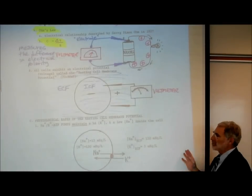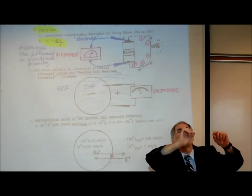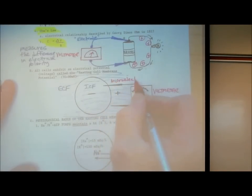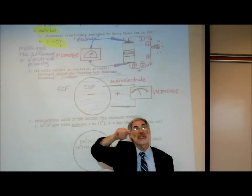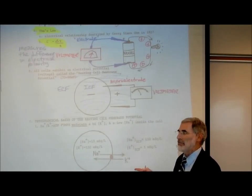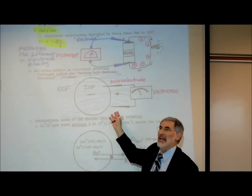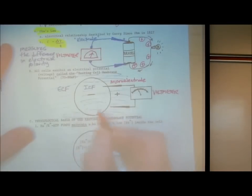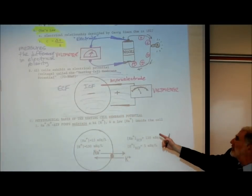The big breakthrough was that they were able to create very small microelectrodes — so small they could insert one into a cell without destroying it. When I was doing my research in the 1970s, I actually did electrophysiology — that's exactly what I did, putting microelectrodes into cells. They're very small and you pop them in.